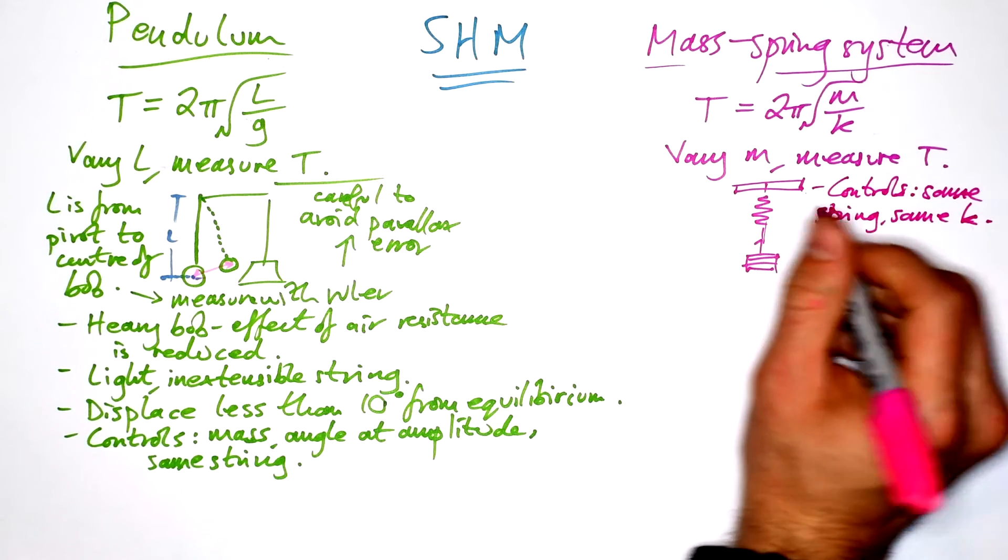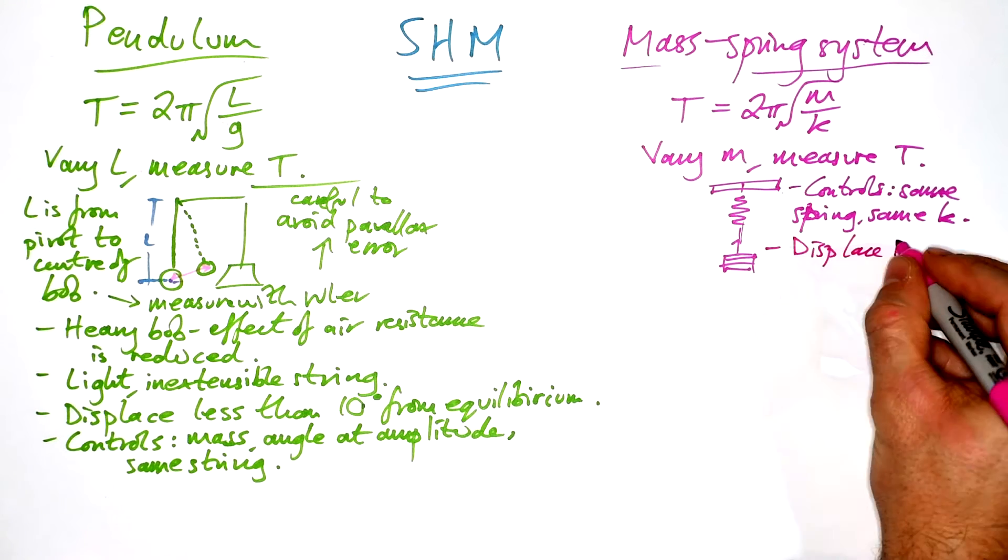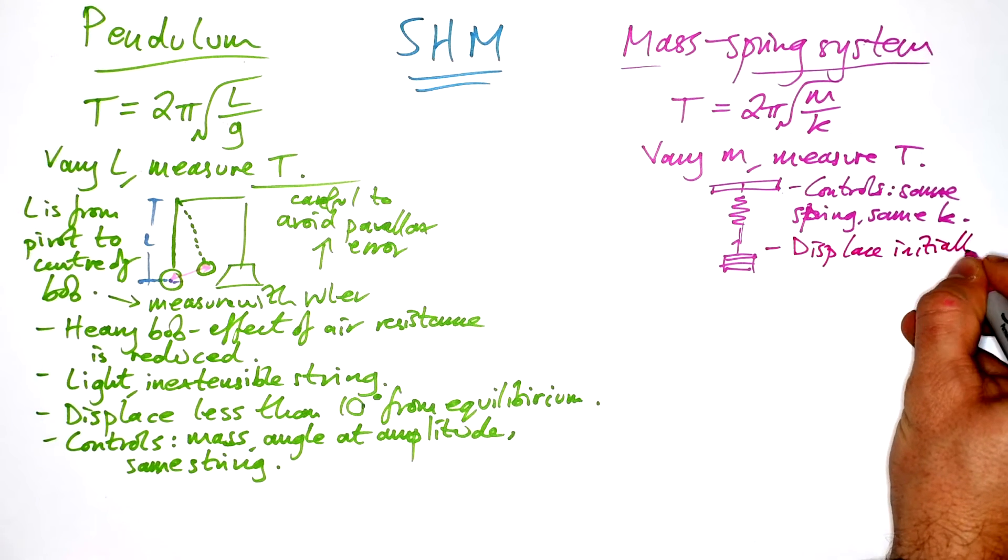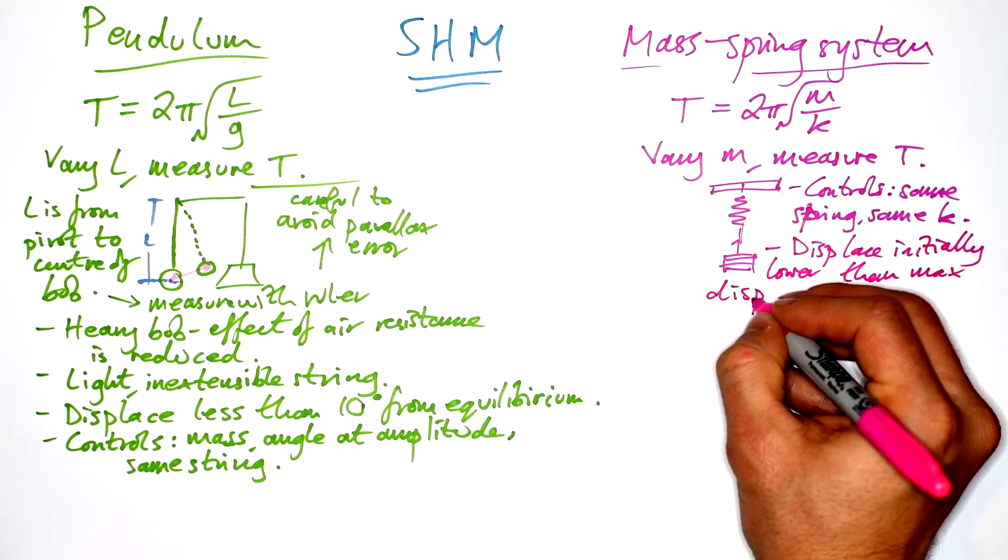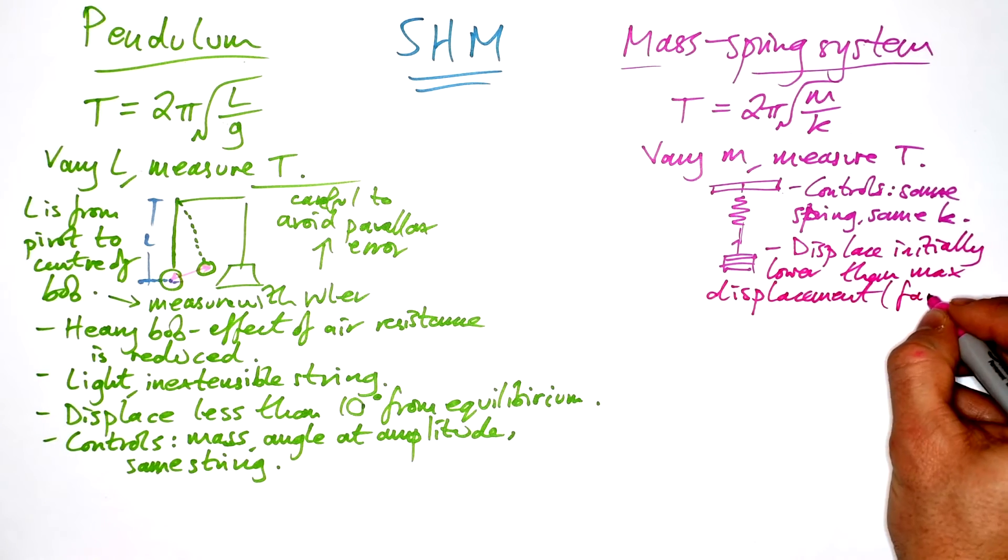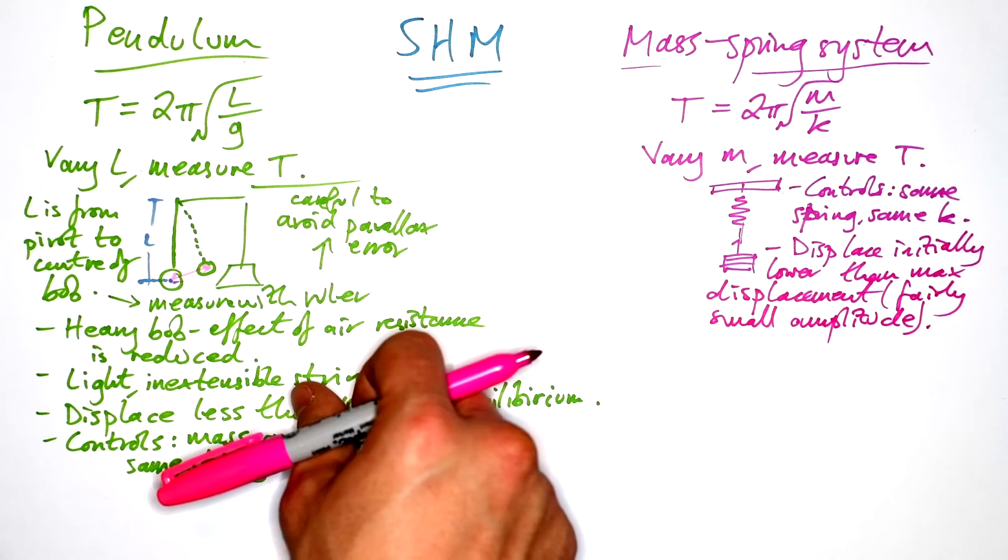We want the same spring, otherwise spring constant is going to change. And so therefore, we're going to displace initially lower than max displacement. In other words, we want the amplitude to be fairly small. We don't need the amplitude to be massive in order to get good results.